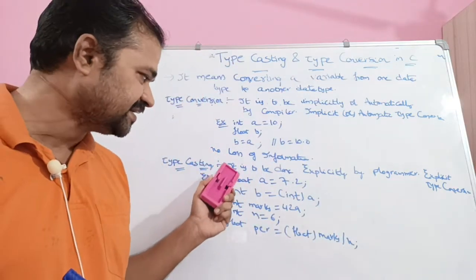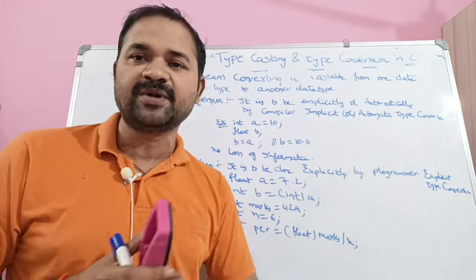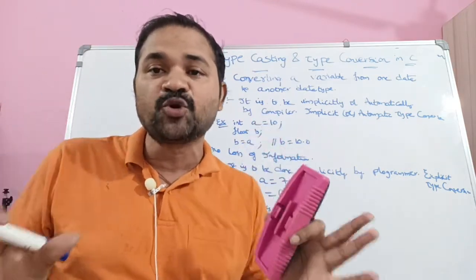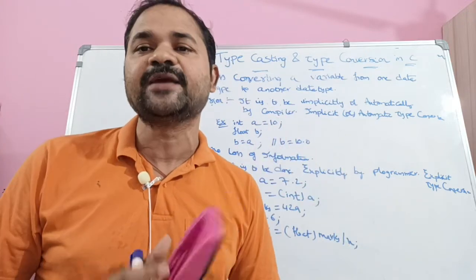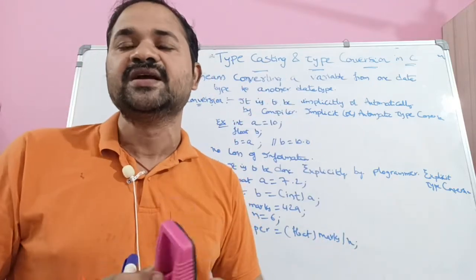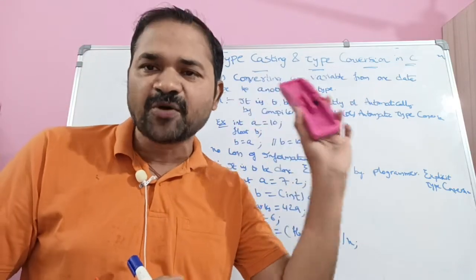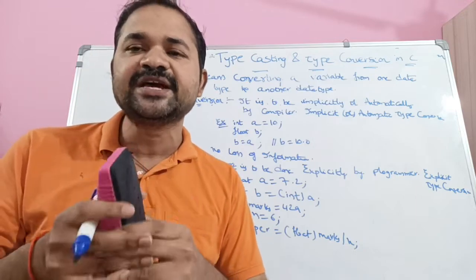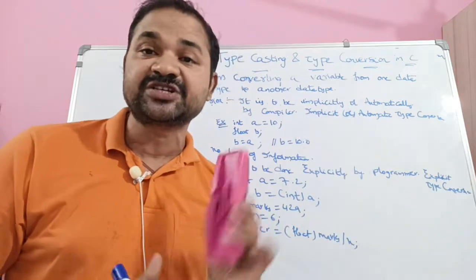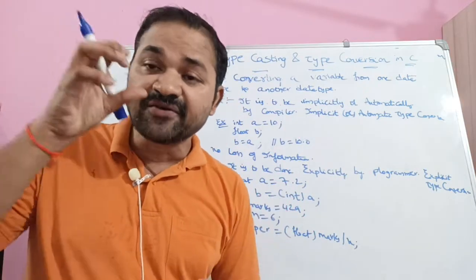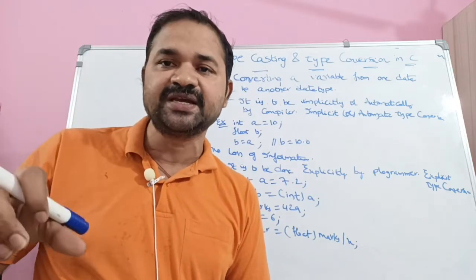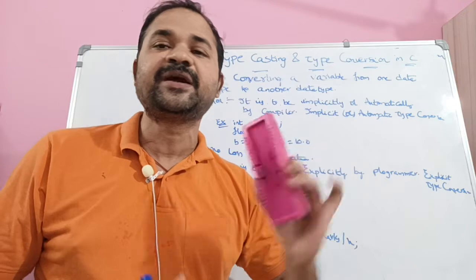Now let's see about typecasting. Typecasting is done explicitly by the programmer. So as a programmer or user, we have to perform the typecasting ourselves. Typecasting is explicit — the programmer performs it, not the compiler. This is called explicit type conversion.